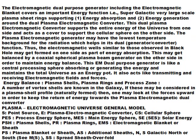The Electromagnetic Dual Purpose Generator includes the Electromagnetic Blanket Cover, an important energy function, supergalactic, very large-scale plasma sheet rings supporting energy absorption, and energy generation around a dual plasma electromagnetic converter. This converter supports the entire energy of the universe from one side and acts as a cover to support the cellular sphere on the other side. The plasma electromagnetic generator may have the lowest temperature background of the radiation, which helps in its dual function.